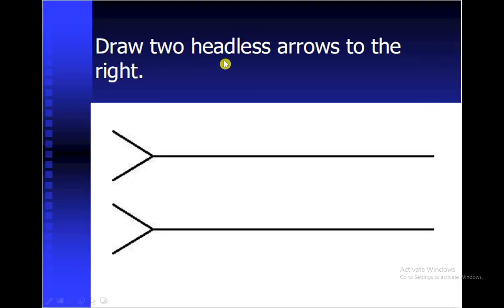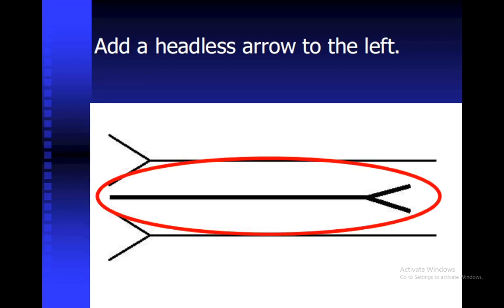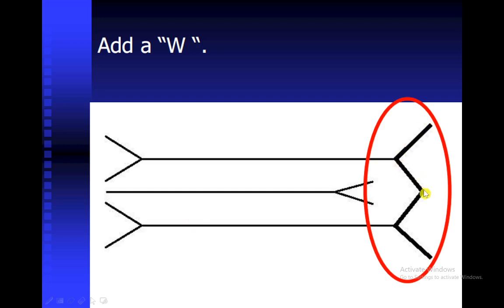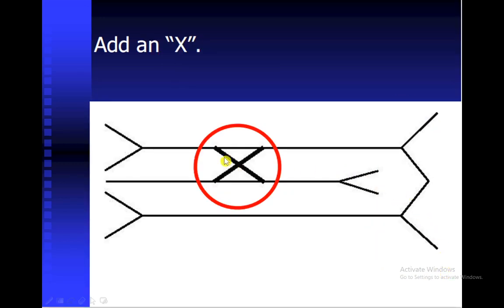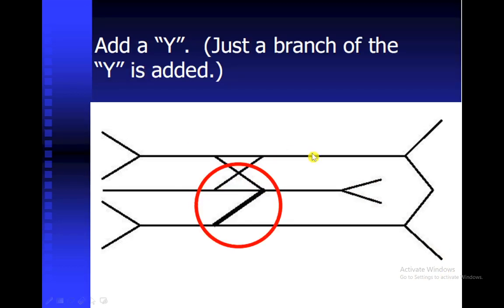So draw two headless arrows to the right. Next you need to draw another headless arrow to the left, but a little bit shorter compared to the previous two drawn in the middle. Then you need to add the W, then add an X, and add one slopey slash — you can say this is making just a branch.